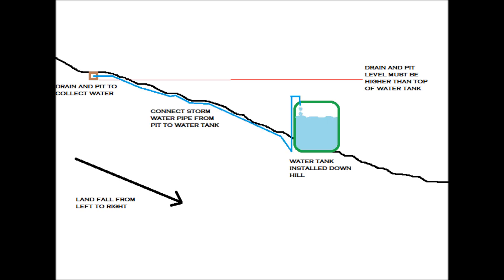The next slide shows the connection, which is piping the pit into the water tank below. Whenever it rains, it will fill up the tank. It's even better if you have animals grazing uphill, as the water will be fertilized with the droppings, ready for you to use.